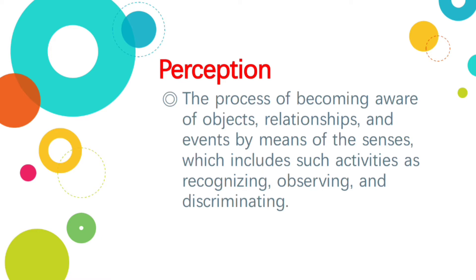Senses humein pata hai — five senses hote hain: vision (sight), taste, hearing, and touch. Toh in senses ko use karte huye hum jo bhi objects recognize kar rahe hain, observe kar rahe hain, ya discriminate karte hain — is process ko hum kehte hain perception.